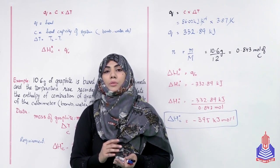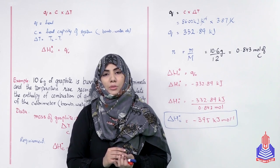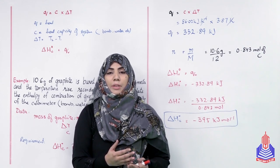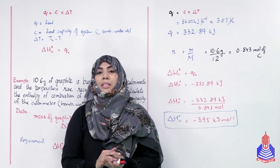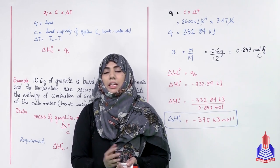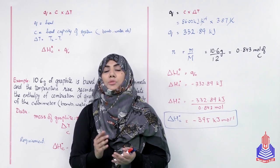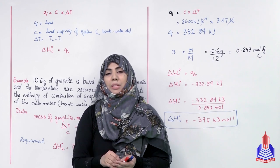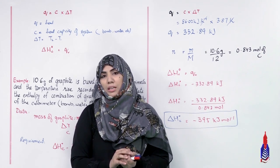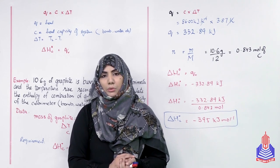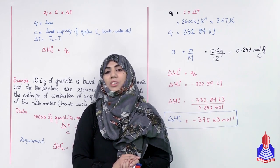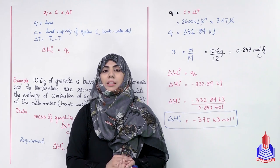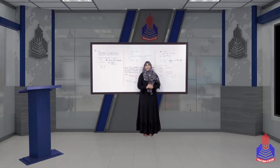आपने देखा कि bomb calorimeter को किस तरह use करते हैं और enthalpy of combustion calculate की। आप यह result ले सकते हैं इस lecture से: glass calorimeter और bomb calorimeter दोनों के data से हम enthalpy changes calculate कर सकते हैं। याद रहे - glass calorimeter में condition है pressure is constant (ΔP = 0), जबकि bomb calorimeter में volume change नहीं होता (ΔV = 0)। यह दो conditions रखकर हम heat changes को measure करते हैं और इस तरह enthalpy को भी measure कर सकते हैं। That was all about today's lecture। Allah Hafiz।